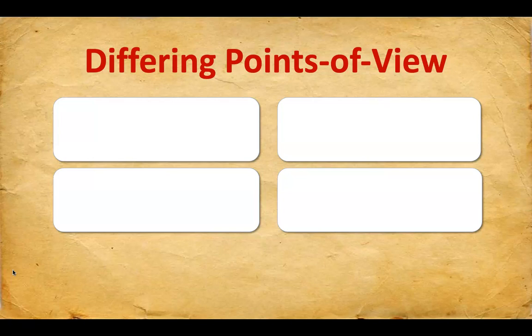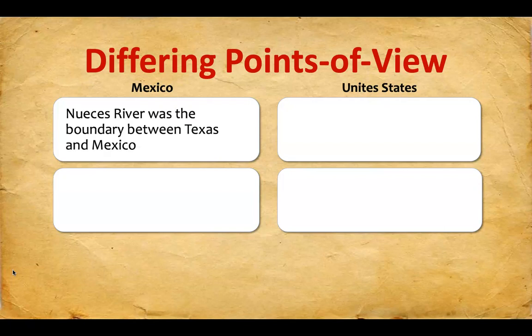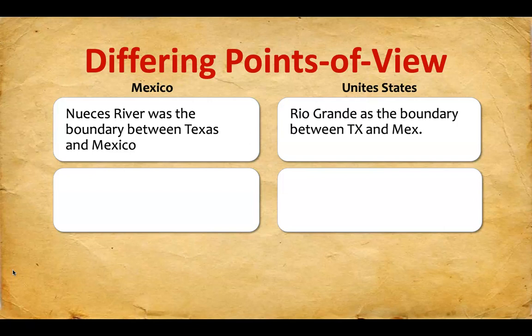Now we're going to look at some differing points of view. We were going to work on a little assignment dealing with point of view at the end. We're going to look at both the Mexican point of view and the American point of view. According to the Mexican point of view, at the beginning of the war the Nueces River was the boundary between Texas and Mexico. In the United States' point of view, the boundary was the Rio Grande.